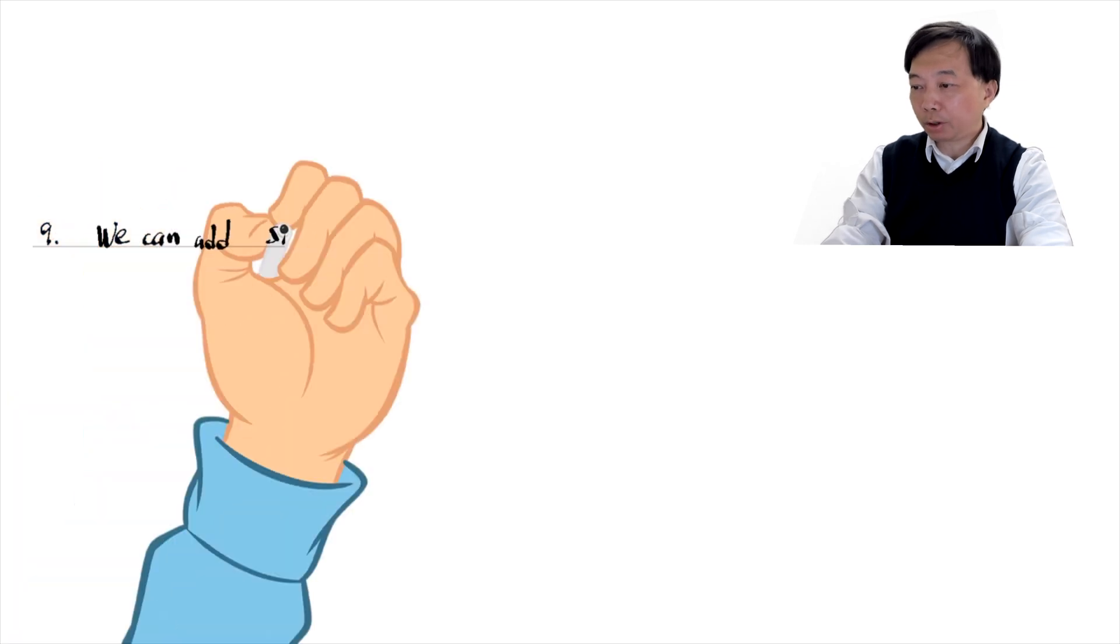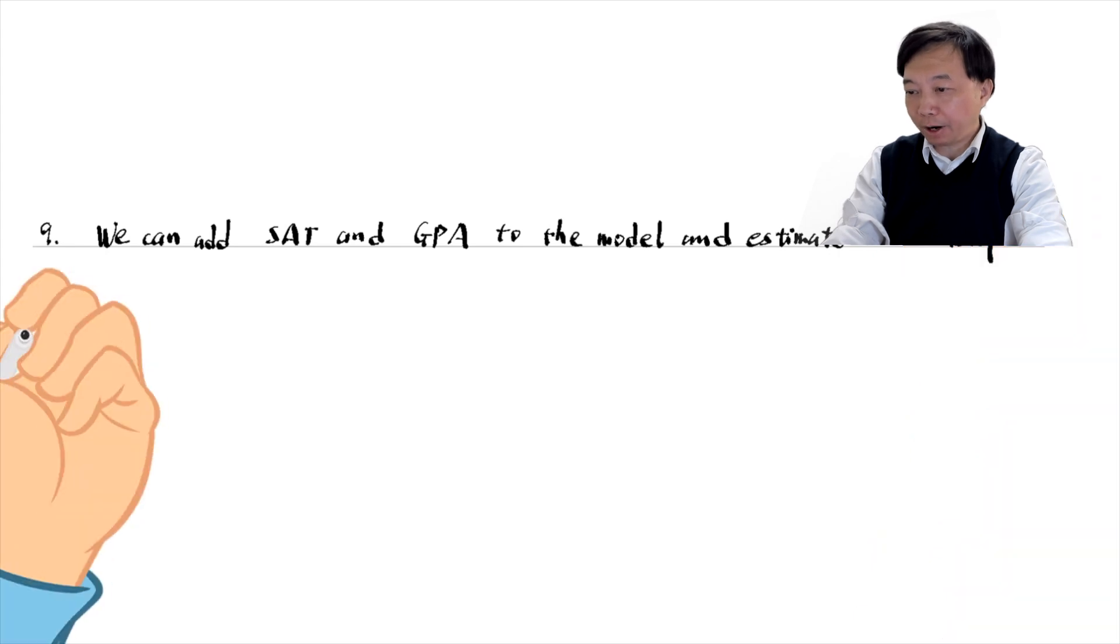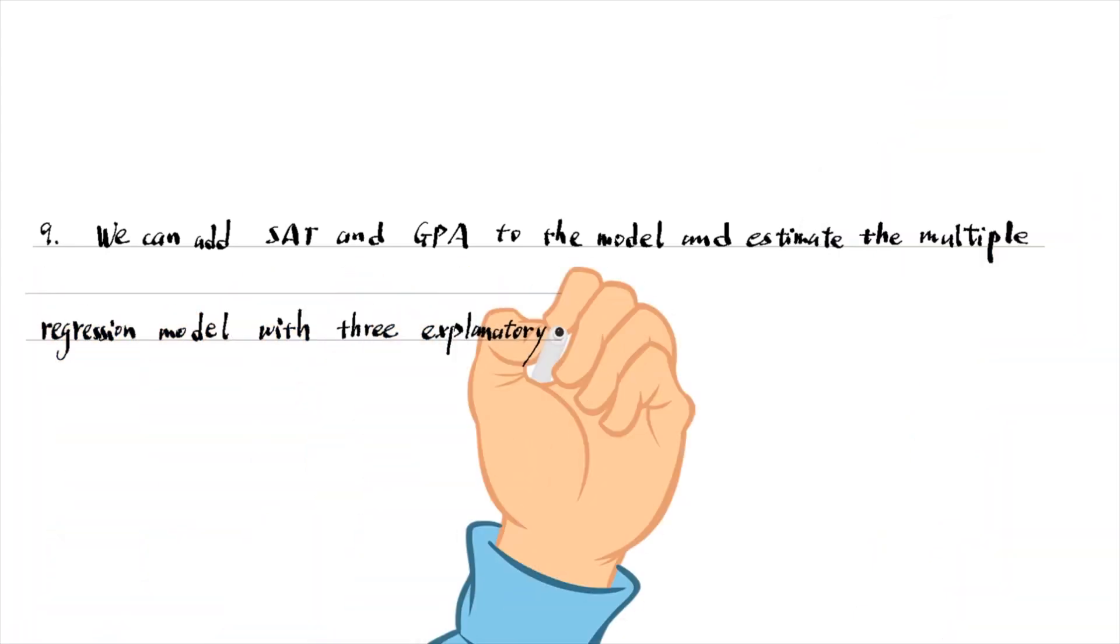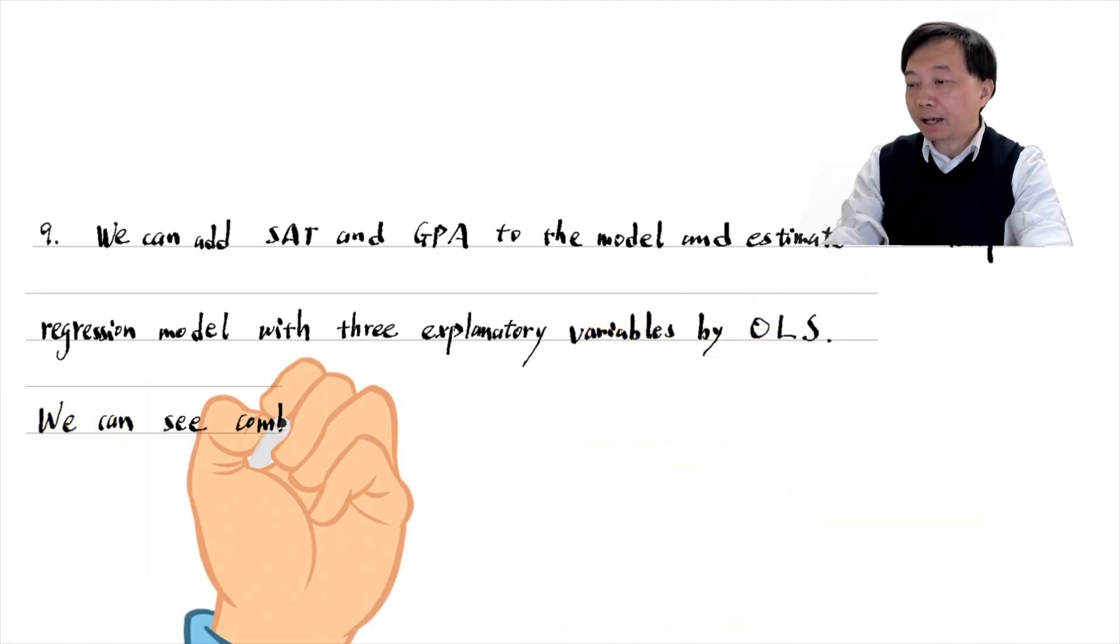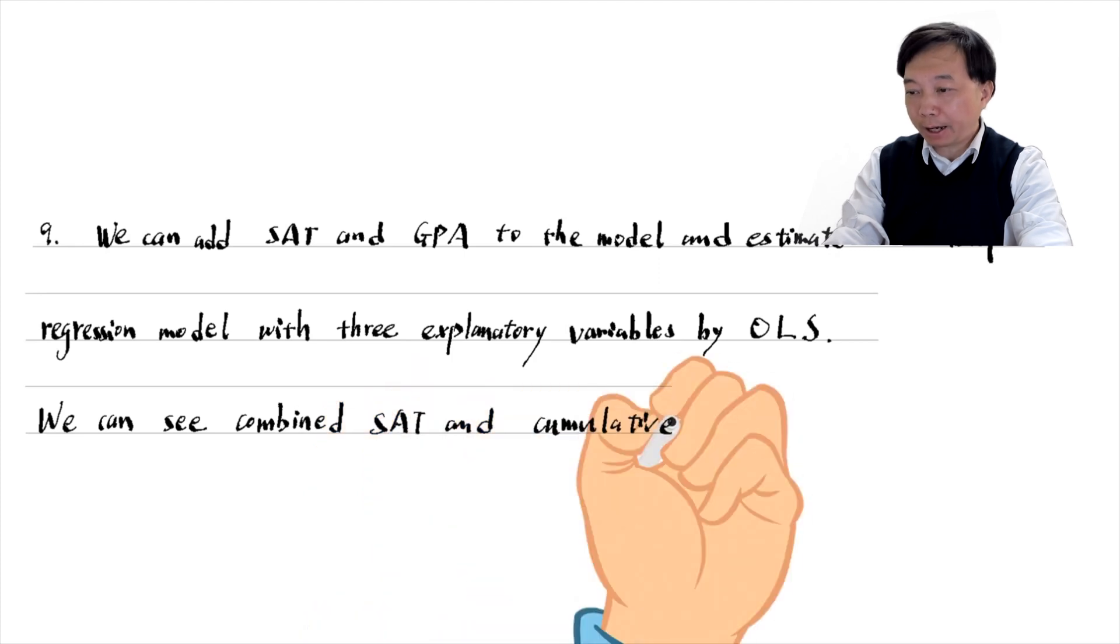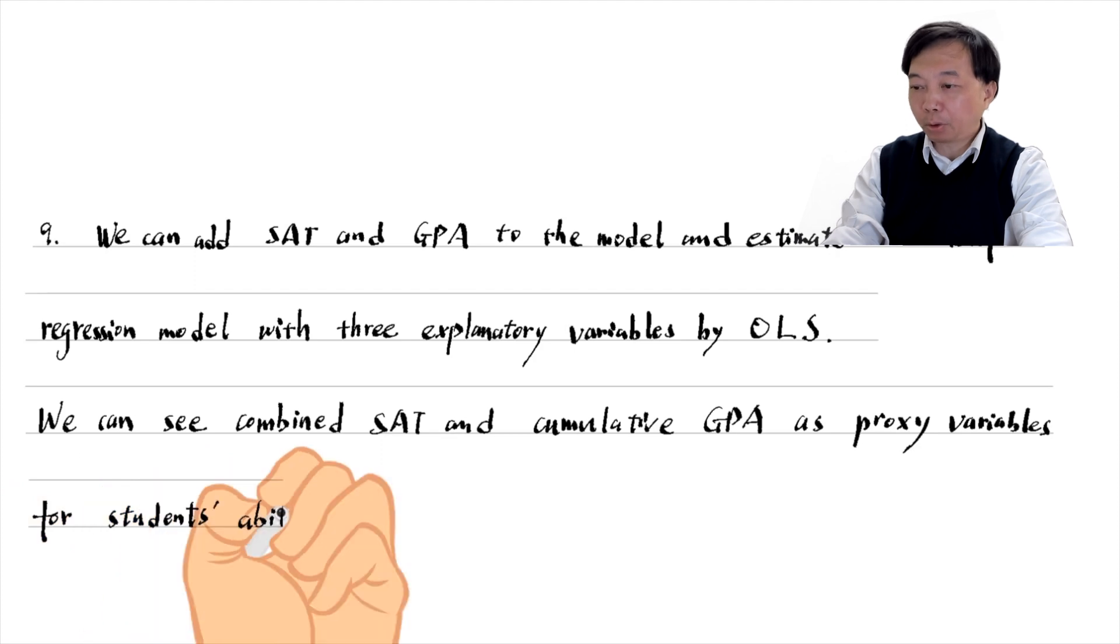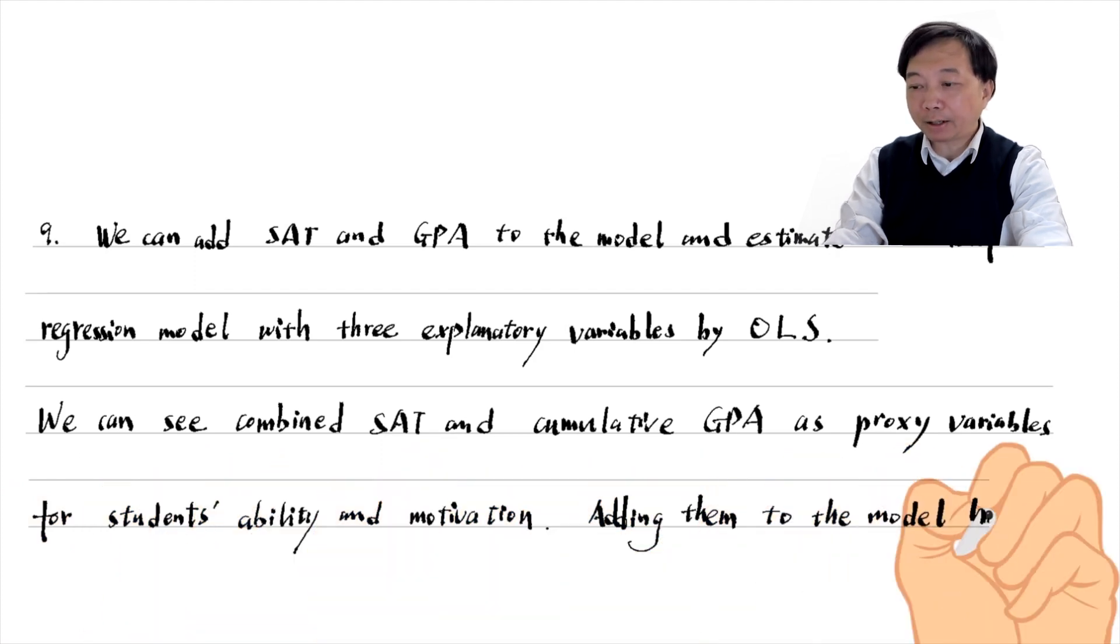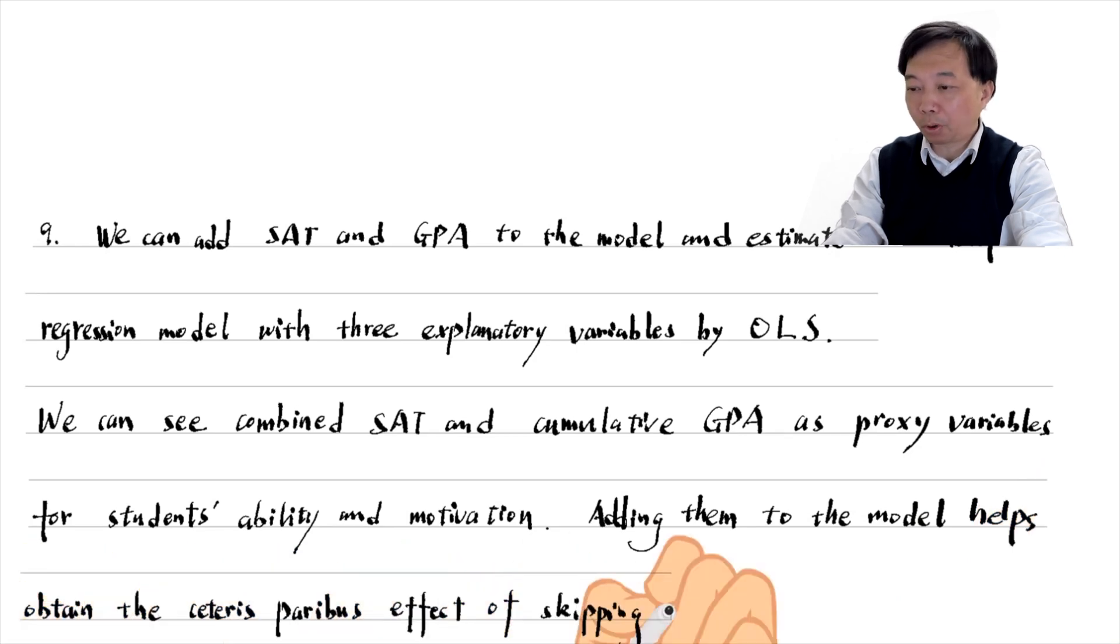We can add SAT and GPA to the model and estimate the multiple regression model with three explanatory variables. We can see combined SAT and cumulative GPA as proxy variables for students' ability and motivation. Adding them to the model helps obtain the ceteris paribus effect of skipping classes on final exam scores.